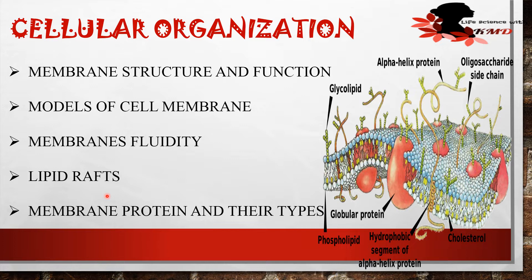Read about lipid rafts, lipid bilayer, sphingolipids, phospholipids, lipid asymmetry, and how lipid asymmetry is maintained. Also study membrane proteins and their types — like integral proteins, peripheral proteins, structural differences, beta-barrels, and how exactly channel proteins differ from carrier proteins.